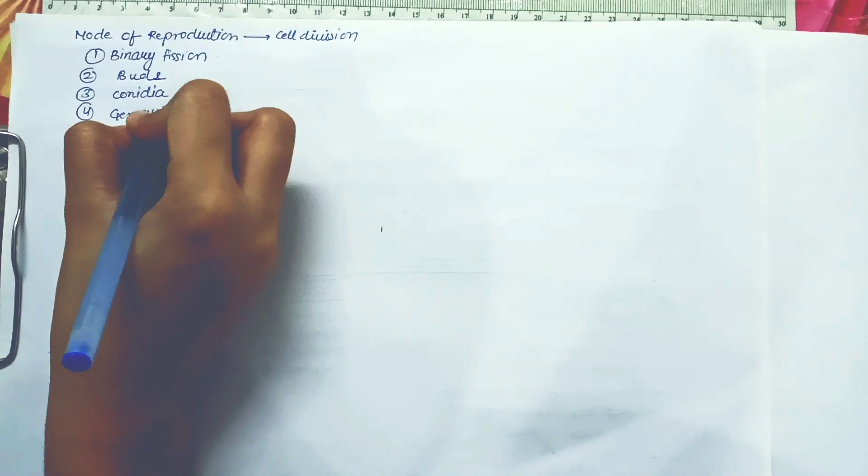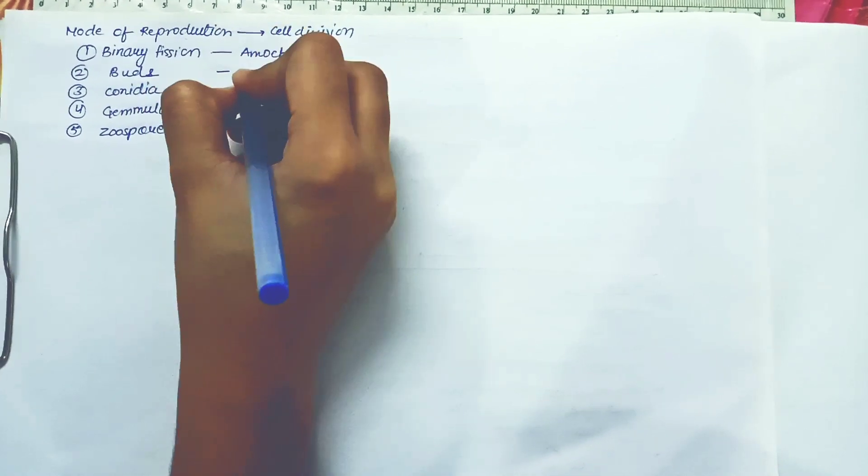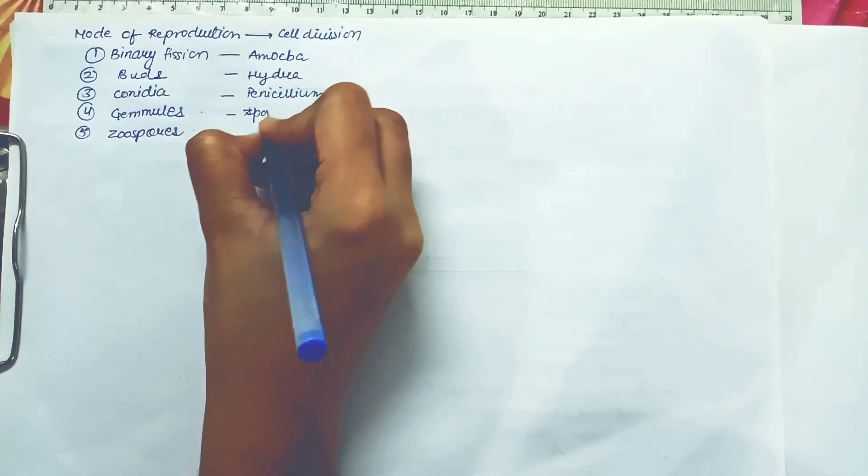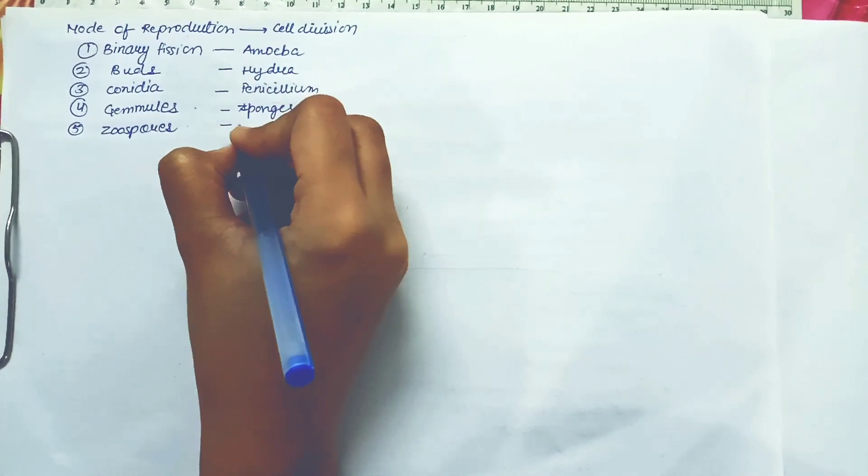Second, we know yeast. In yeast there is formation of buds. And we all know that in Penicillium it's conidia. In sponges it is gemmules. In Chlamydomonas it is zoospores. Binary fission in amoeba, buds in hydra, conidia in Penicillium, gemmules in sponges, and zoospores in Chlamydomonas.